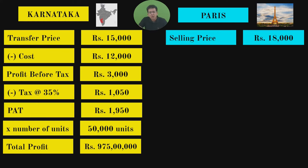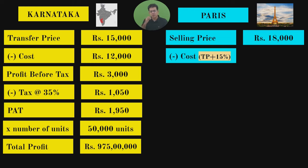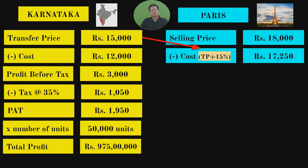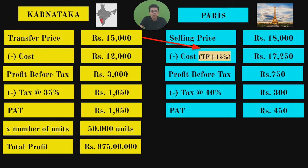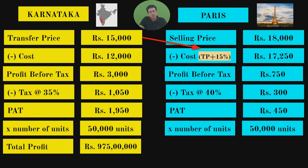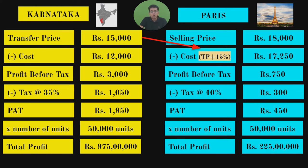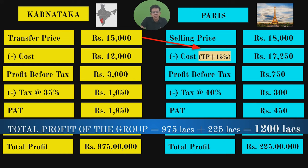For the Paris division with transfer price = ₹15,000: selling price is still ₹18,000. Cost = transfer price ₹15,000 plus import duty at 15% = ₹15,000 + ₹2,250 = ₹17,250. Profit before tax = ₹18,000 − ₹17,250 = ₹750. Subtract income tax at 40% = ₹300; profit after tax per unit = ₹450. Multiply by 50,000 units = ₹225 lakhs. Total company profit = ₹975 + ₹225 = ₹1,200 lakhs.